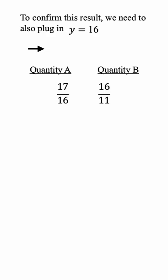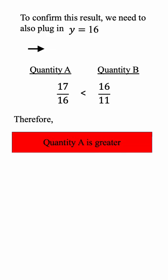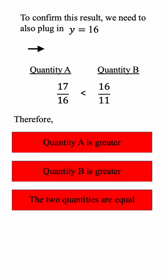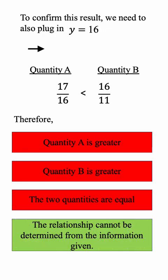It's easy to say that quantity B is greater. Based on this, we can say quantity A is greater is not correct, quantity B is greater is not correct, and the two quantities are equal is not correct. Therefore, the only item which remains is the relationship cannot be determined from the information given.